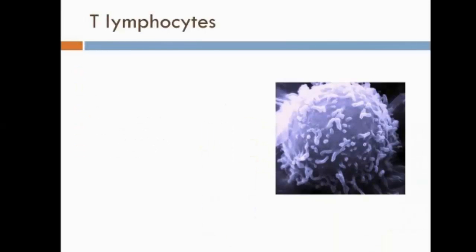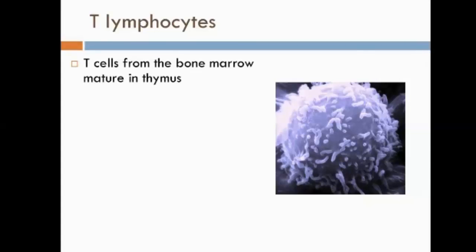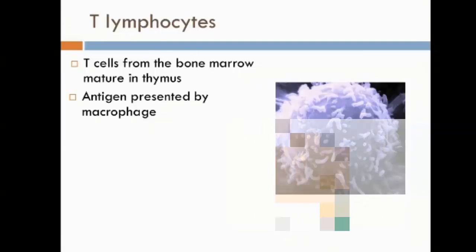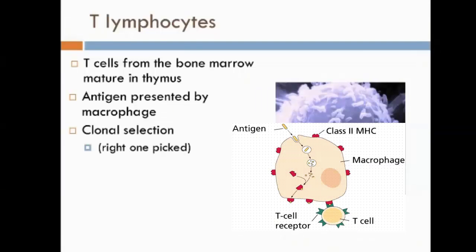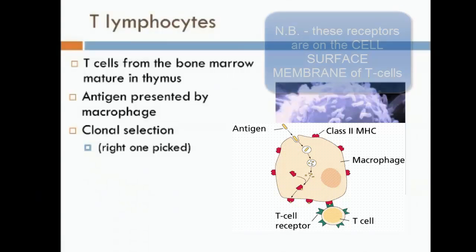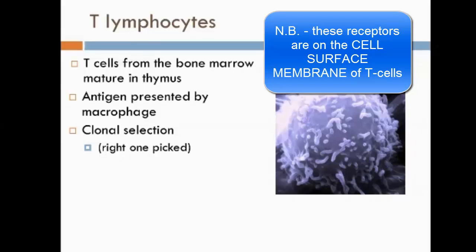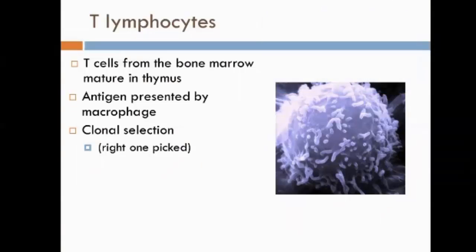Antigen-presenting cells are vital in ensuring the correct T cells are produced. T cells are made in the bone marrow and travel to the thymus to mature — easy to remember: T for thymus. Once the antigen has been presented, clonal selection takes place to ensure the correct T cell is picked. T cells have receptors that respond to only one antigen. Once selected, the correct T cell rapidly divides by mitosis in a process called clonal expansion, literally cloning itself so that there are lots of them.